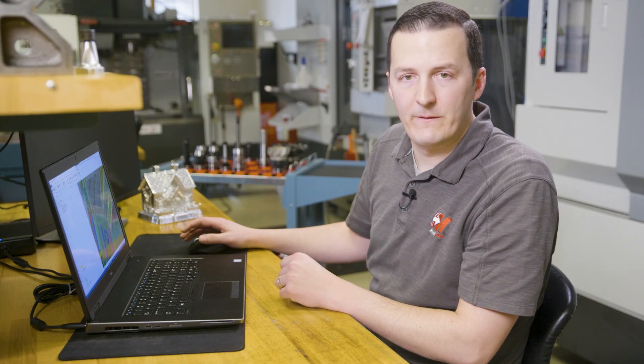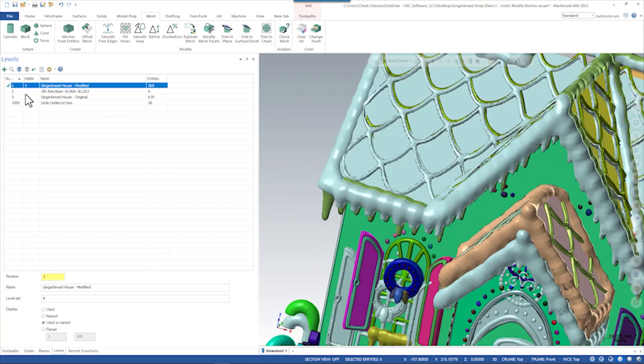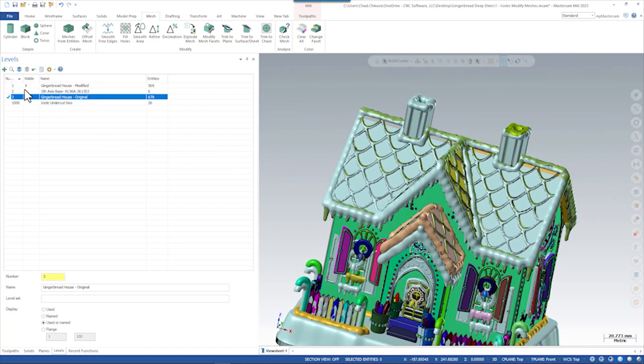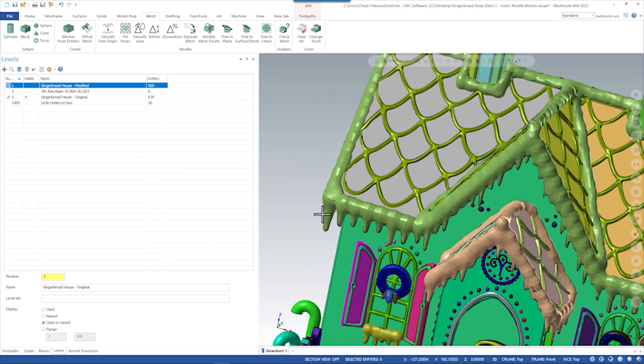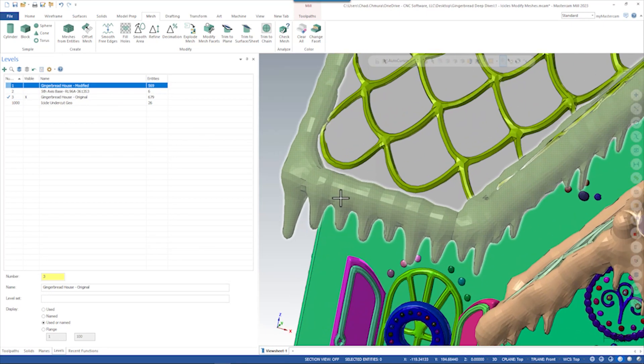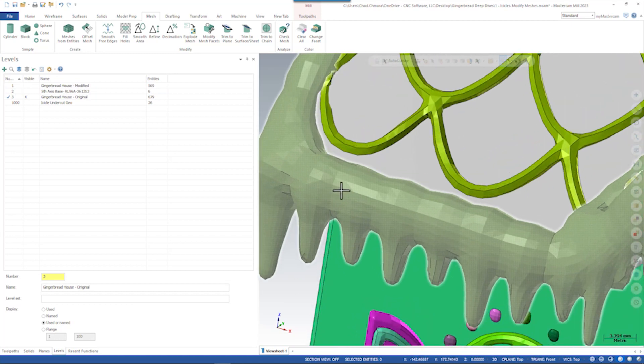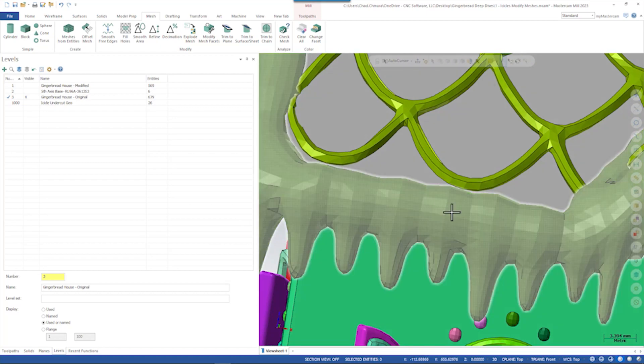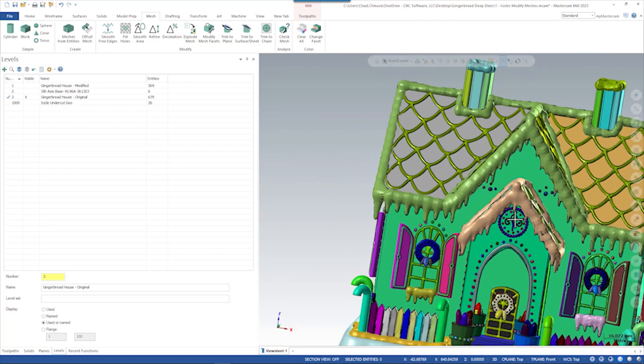Looking at this compared to the final model - this is our final model that was as machined, this is the model now that we just took in and split apart - we can see there are some problems. First of all, this is really faceted, it's really not a high quality, high count polygon model.